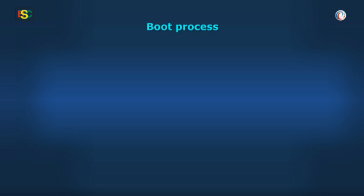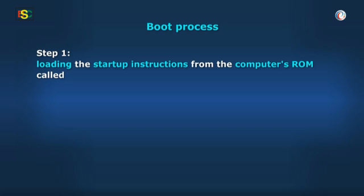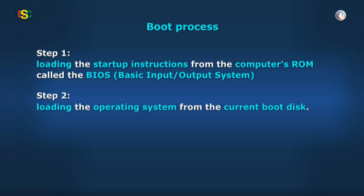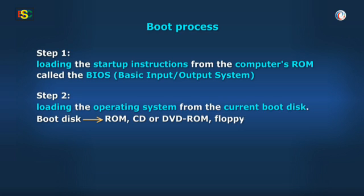This process involves loading the startup instructions from the computer's ROM, called the BIOS — Basic Input Output System. This is followed by loading the operating system from the current boot disk. The boot disk is usually an internal ROM, but can also be an external drive, a CD or DVD ROM, or even a floppy disk.